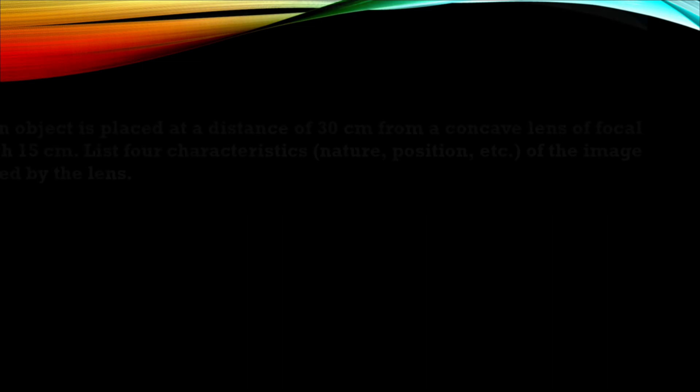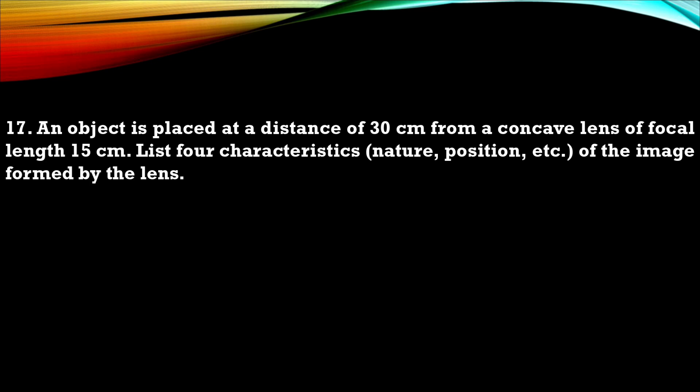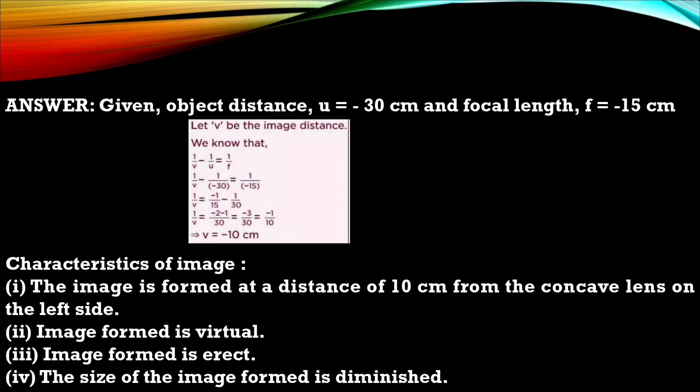Question 17. An object is placed at a distance of 30 centimeter from a concave lens of focal length 15 centimeter. List four characteristics: nature, position etc of image formed by the lens. So this is a solution. Numerical you need to solve, write your formula. Characteristics try to write in points.